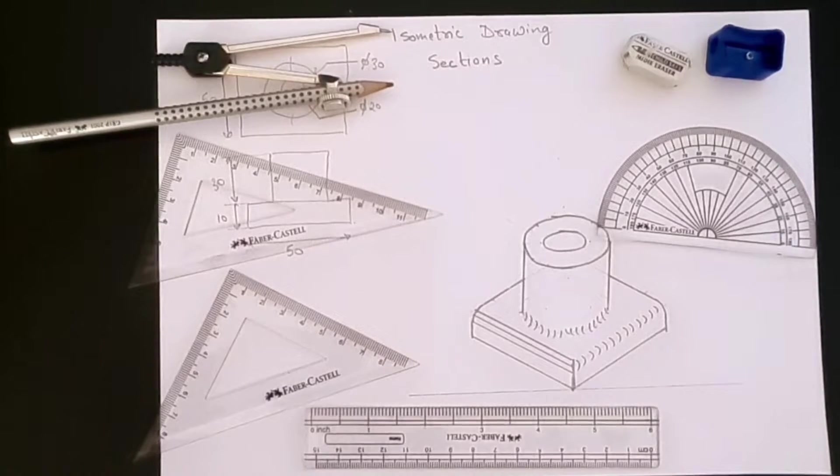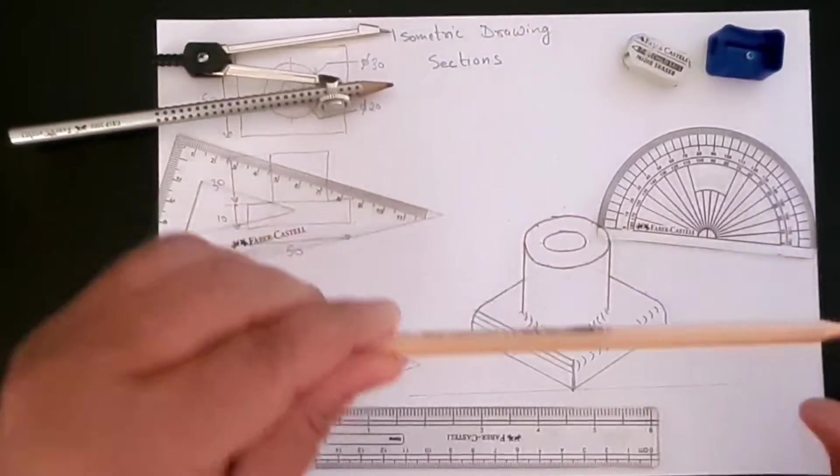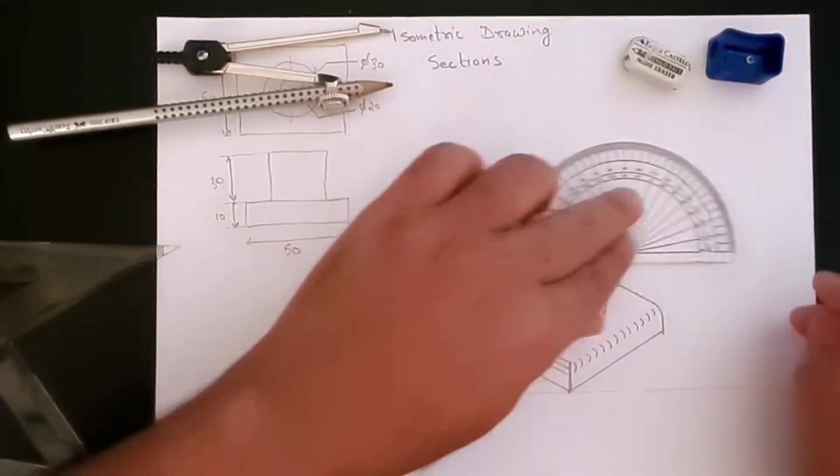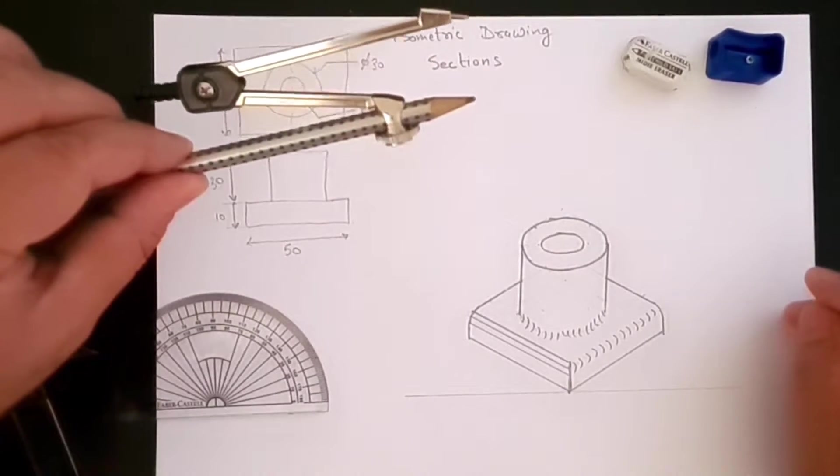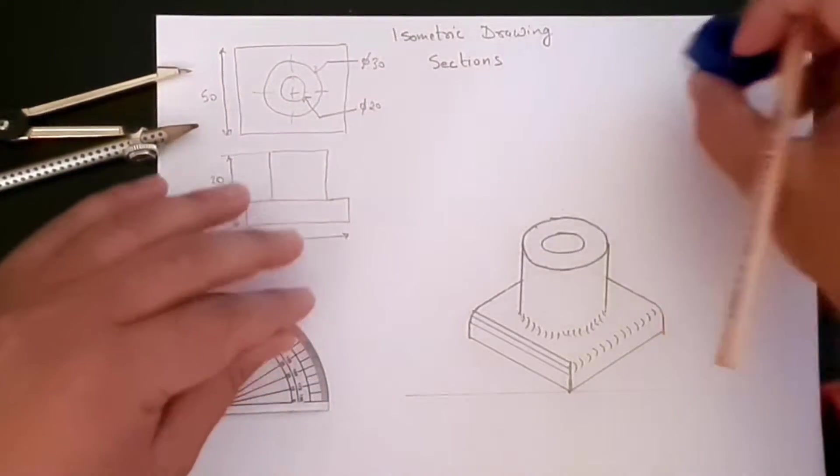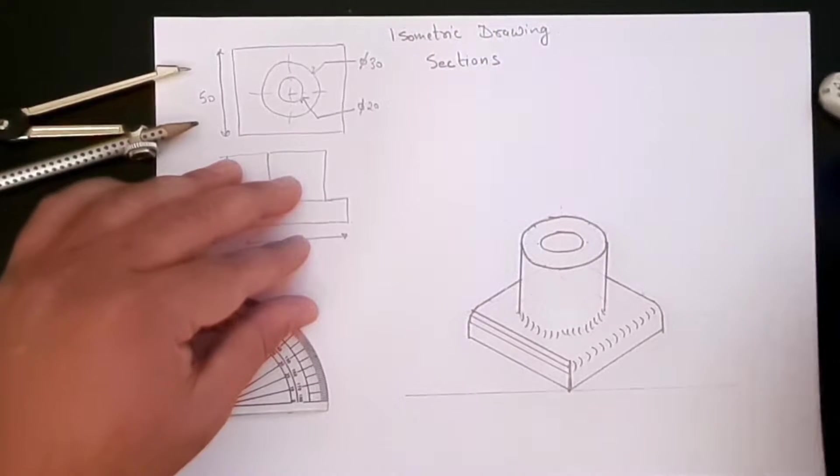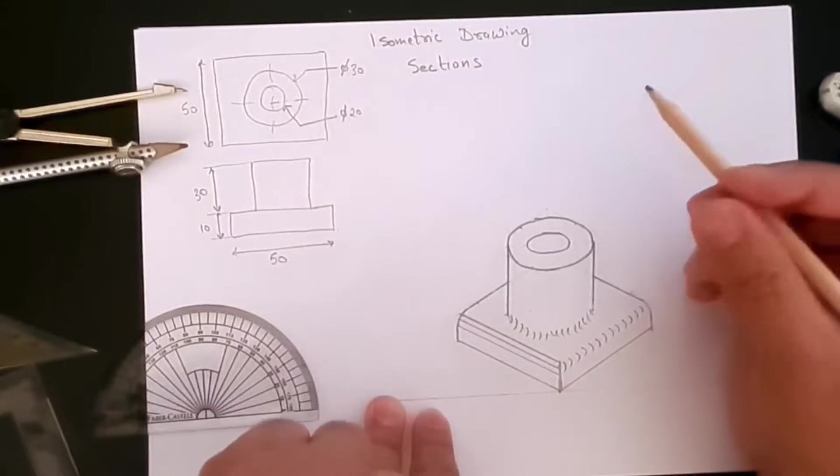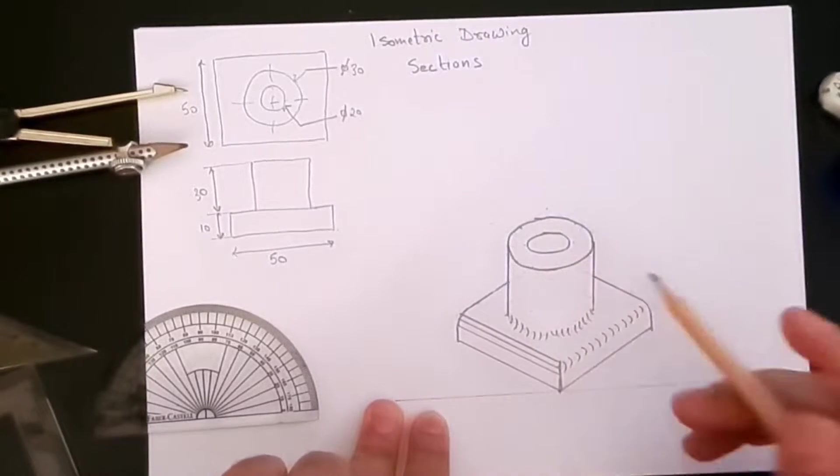Hello and welcome to this series of videos where we create isometric drawings using our standard tools: pencil, scale, set squares, protractor, compass, eraser, and sharpener. In the last video we saw how to create the fillets on the rounds and also on the edges.